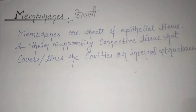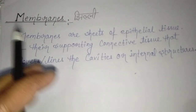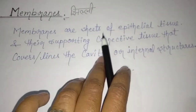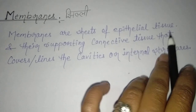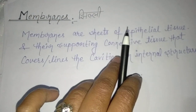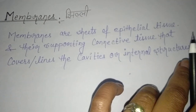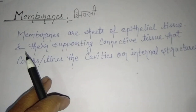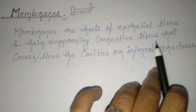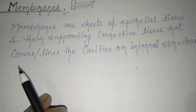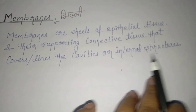Welcome, dear children, to this topic: membranes. Membranes ki Hindi mein indiyo tai hai jhilli. Membranes are sheets of epithelial tissue — jhilli upkala utak — aur unke samarthan sayoji utak ki chadren hain. They are sheets of epithelial tissue and their supporting connective tissue that covers and lines the cavities or internal structures.